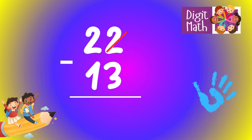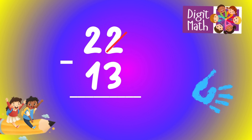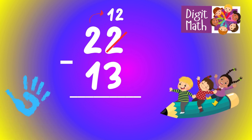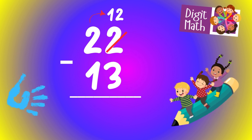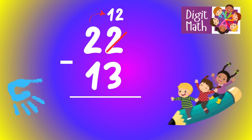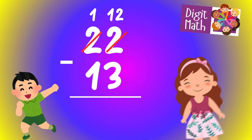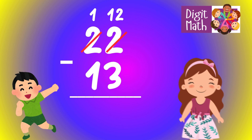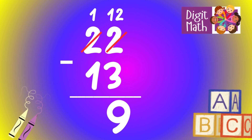Let's go to the answer. In the units column, we have 2 minus 3. Since it's not possible to subtract 3 from 2, we need to borrow from the tens column. In the tens column, we have 2. We take 1 from the tens, leaving 1 in the tens column, and turning the units column into 12. Now, we have 12 in the units column. Subtract 3 from 12, which equals 9.